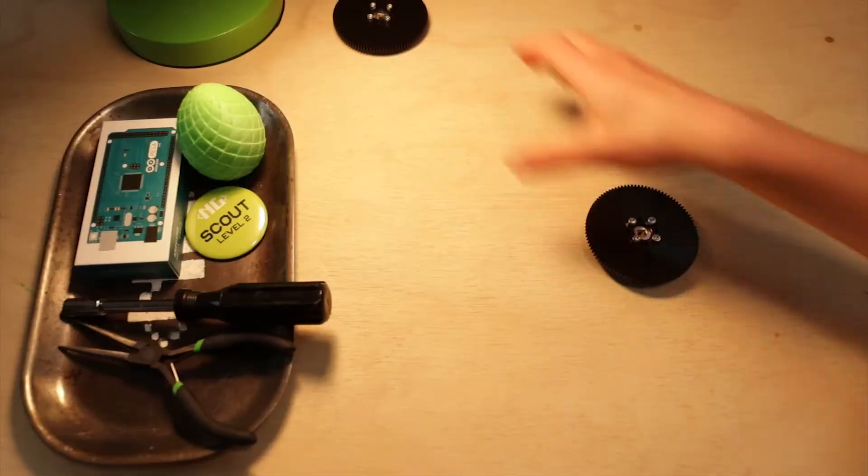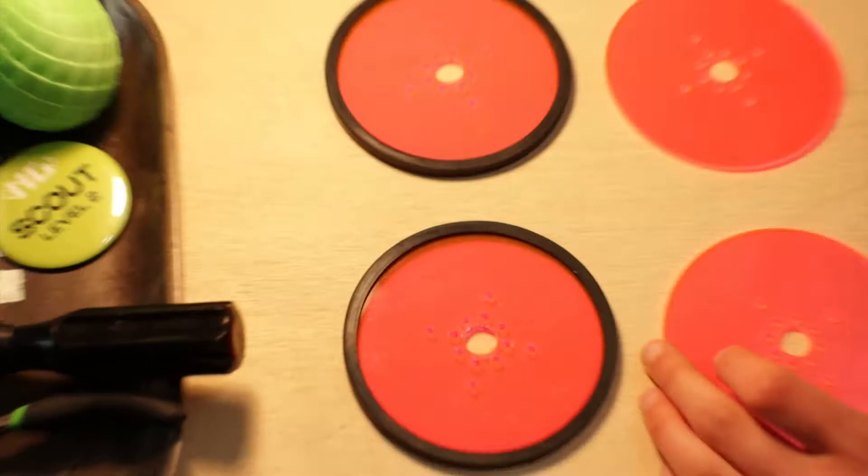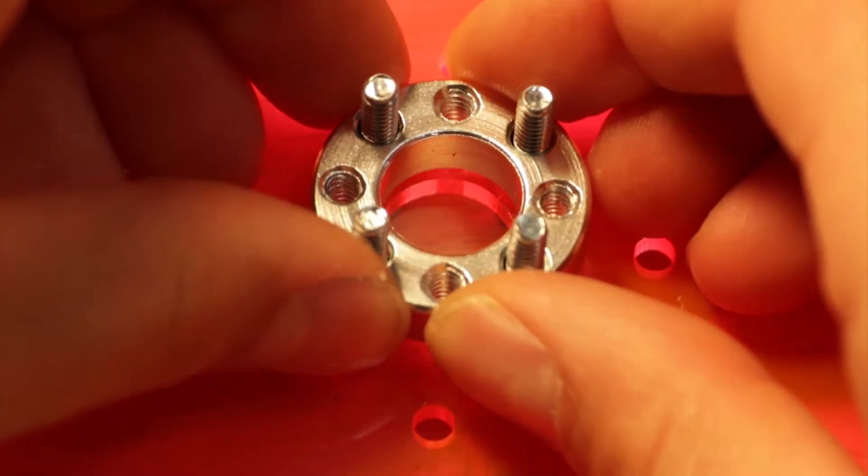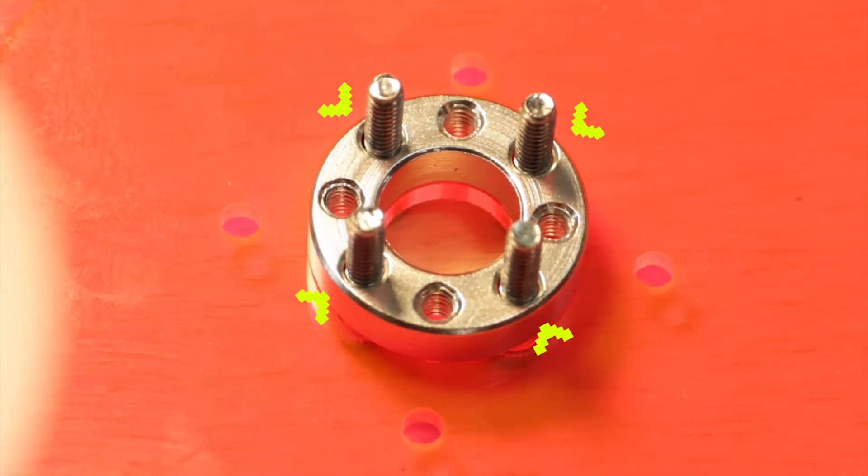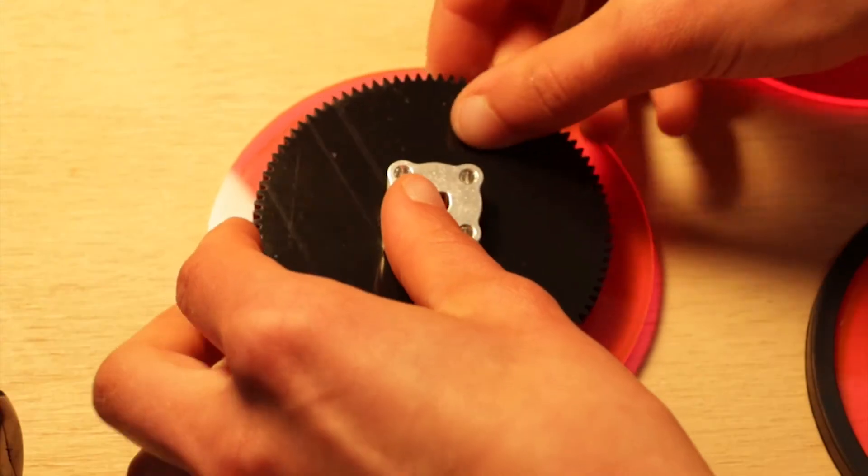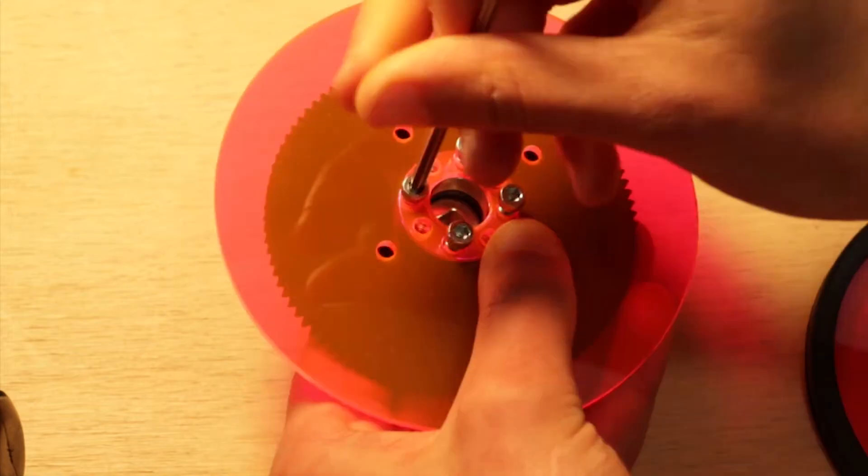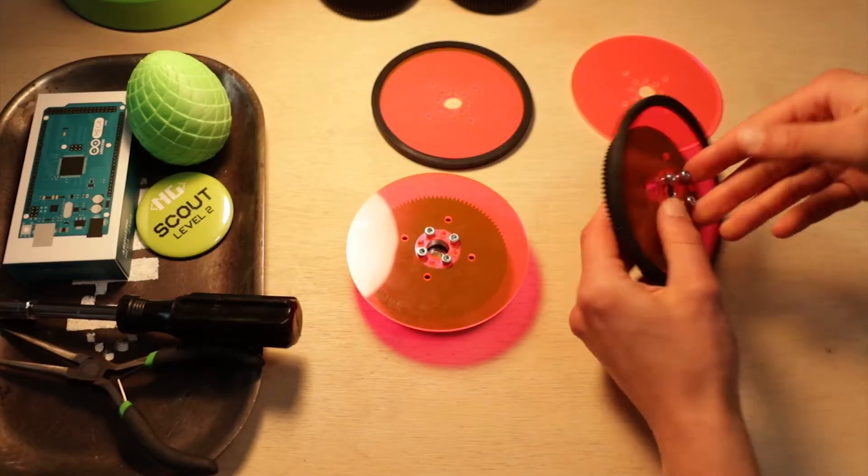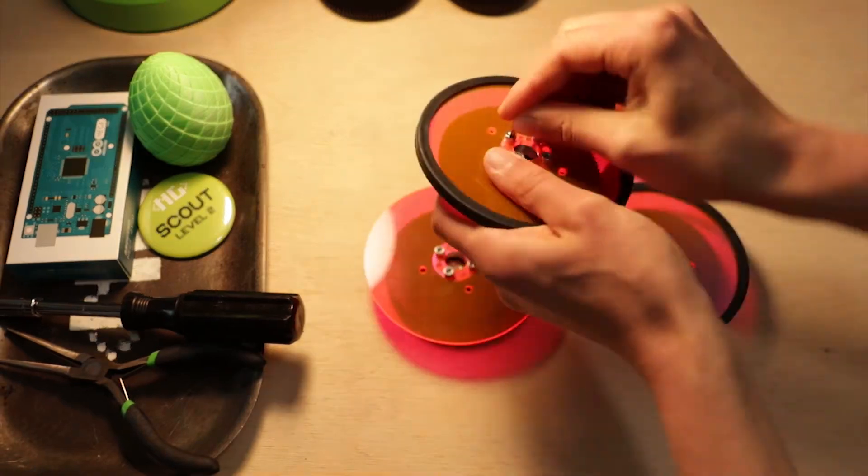Set those aside for a second, and then you're gonna make four stack-ups that look like a precision disc wheel, then through the non-threaded holes of the quarter-inch hub spacer. Side note, you can do threaded for more security, but using the non-threaded holes, it's easier than your gear, and then a D-hub. Get those nice and tight.